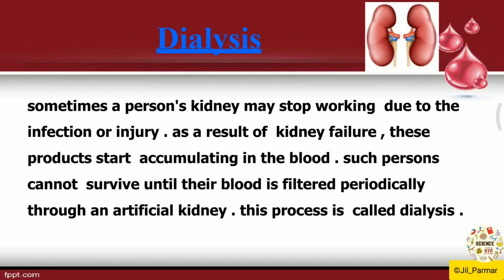When the kidney stops working, the blood cannot be purified and waste cannot be removed from it. That waste keeps accumulating in the blood. Such persons cannot survive until their blood is filtered periodically through an artificial kidney. Since these waste products are toxic, they can be fatal. So purifying the blood becomes compulsory — without removing the waste, the person could die. Therefore, the blood must be purified through an artificial kidney, and this process is called dialysis.